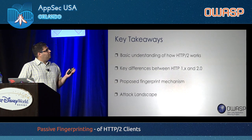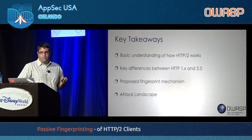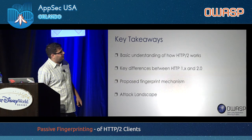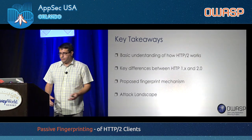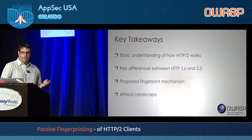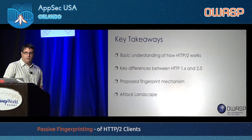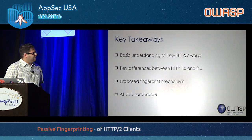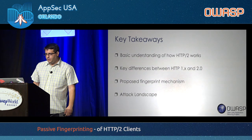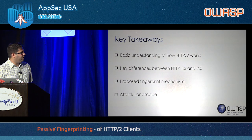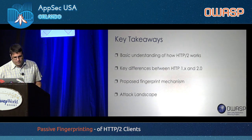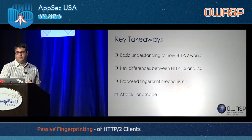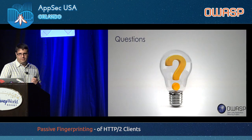I hope you've taken away a basic understanding of how the protocol works, its key elements, and the key differences between HTTP/1 and HTTP/2. We've gone over the fingerprinting mechanism and the elements we chose — other elements such as acknowledgment behavior are not consistent enough to include. We also did an overview of the attack landscape, or rather the current lack of attacks, but it's just a matter of time — HTTP/2 is getting more and more attention. Hopefully this has been informative. Questions?